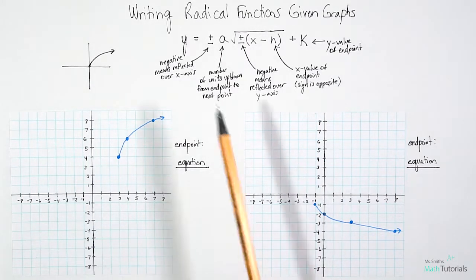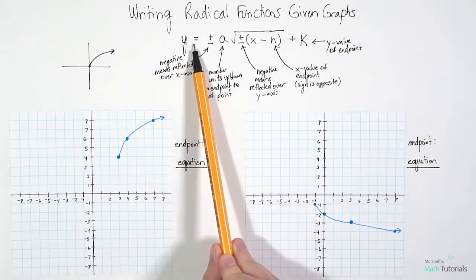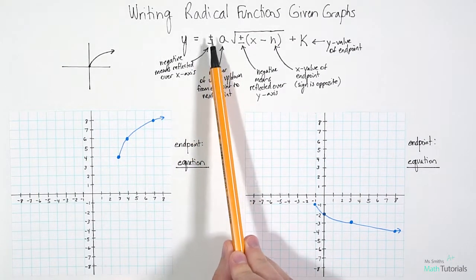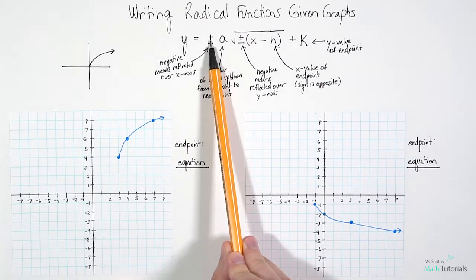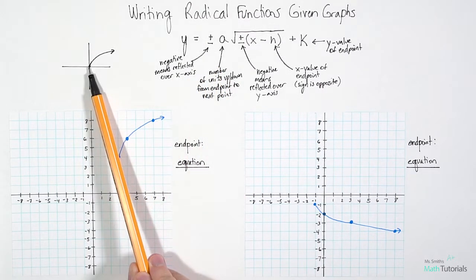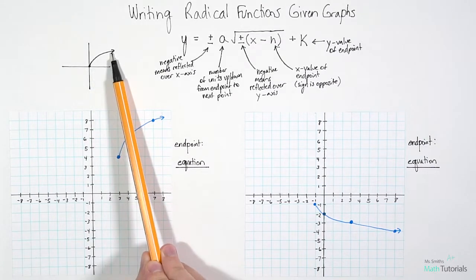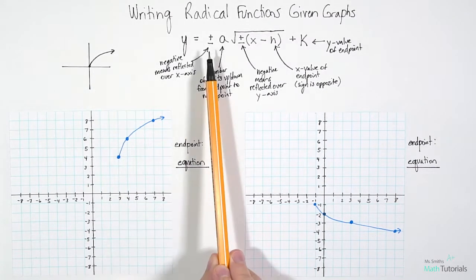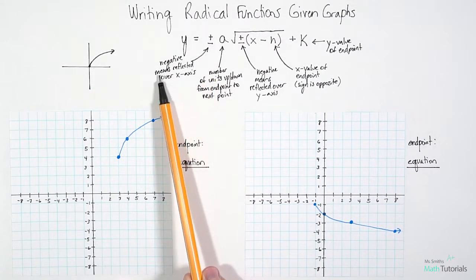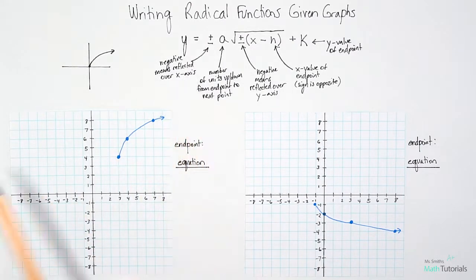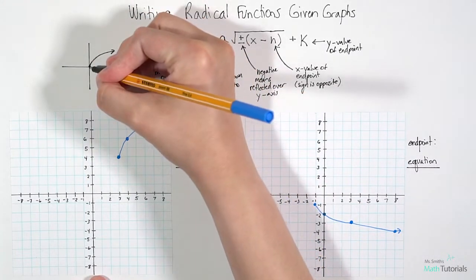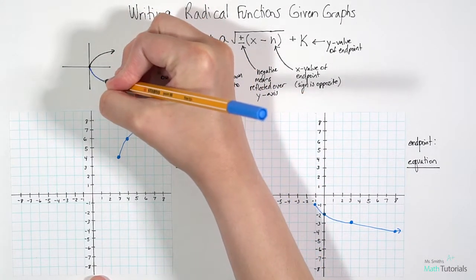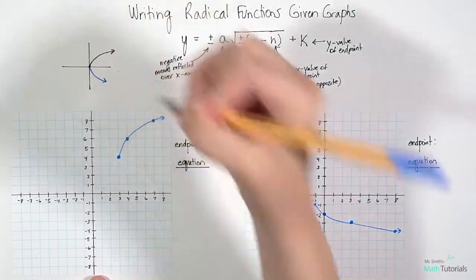A few things we need to lay out first. Each one will start out y equals, and then we'll decide: are we going to be positive or negative? If we're positive, that just means it's standard — a regular non-flipped radical. But if it's negative, that means it's reflected over the x-axis, so the radical will look like this and move in that direction.